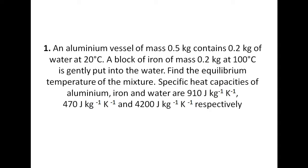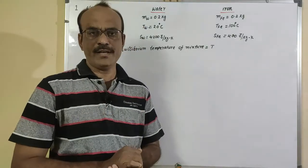Calorimetry question number one: an aluminum vessel of mass 0.5 kg contains 0.2 kg of water at 20 degrees centigrade. A block of iron of mass 0.2 kg at 100 degrees centigrade is gently put into the water. Find the equilibrium temperature of the mixture. Given specific heat capacities of aluminum, iron, and water are 910, 470, and 4200 joule per kg·kelvin respectively.